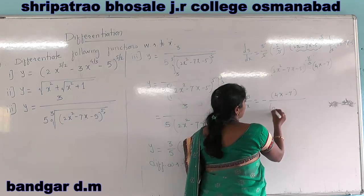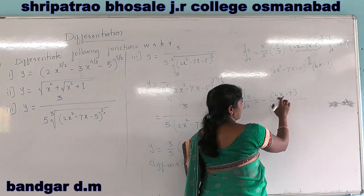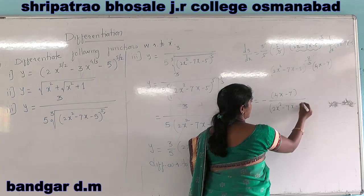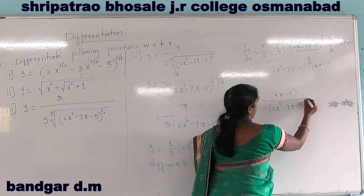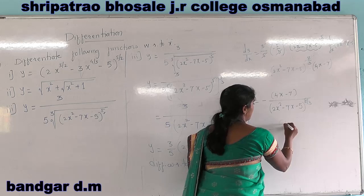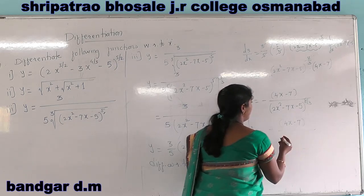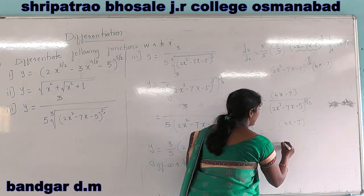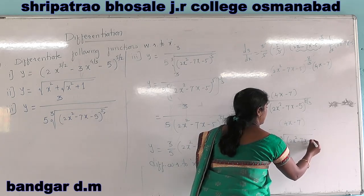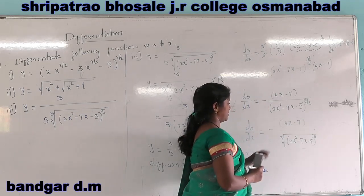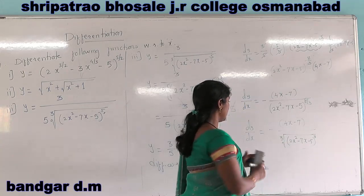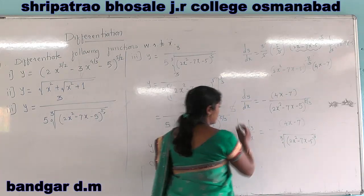So we write dy by dx as minus 4x minus 7 upon 2x squared minus 7x minus 5 raised to 8 by 3. Or we can write the final answer as dy by dx equals minus 4x minus 7 upon cube root of 2x squared minus 7x minus 5, to the power 8, since cube root corresponds to power 1 by 3. This is our final answer.